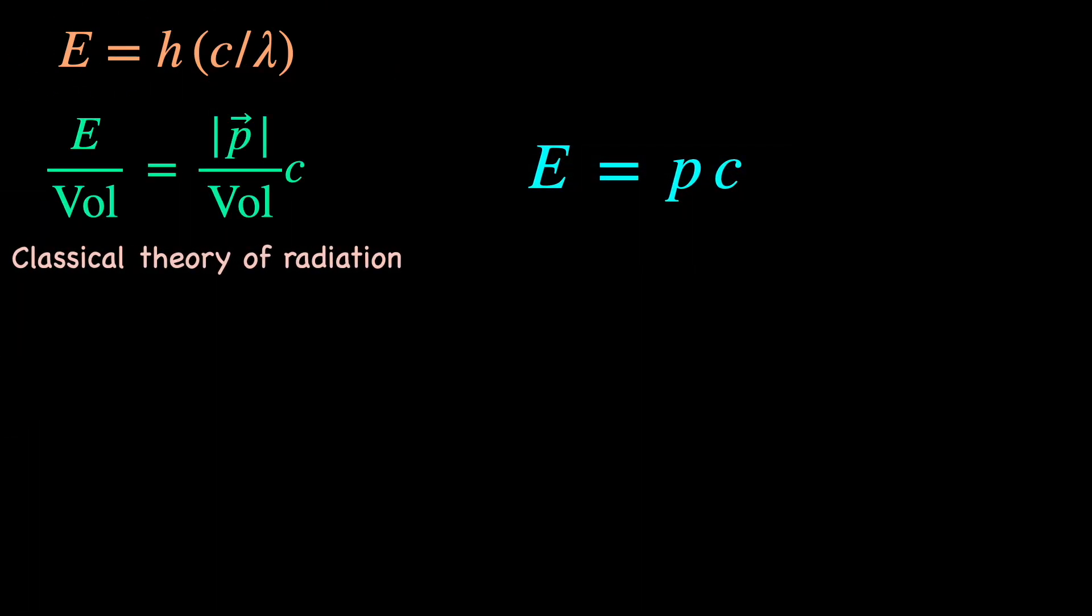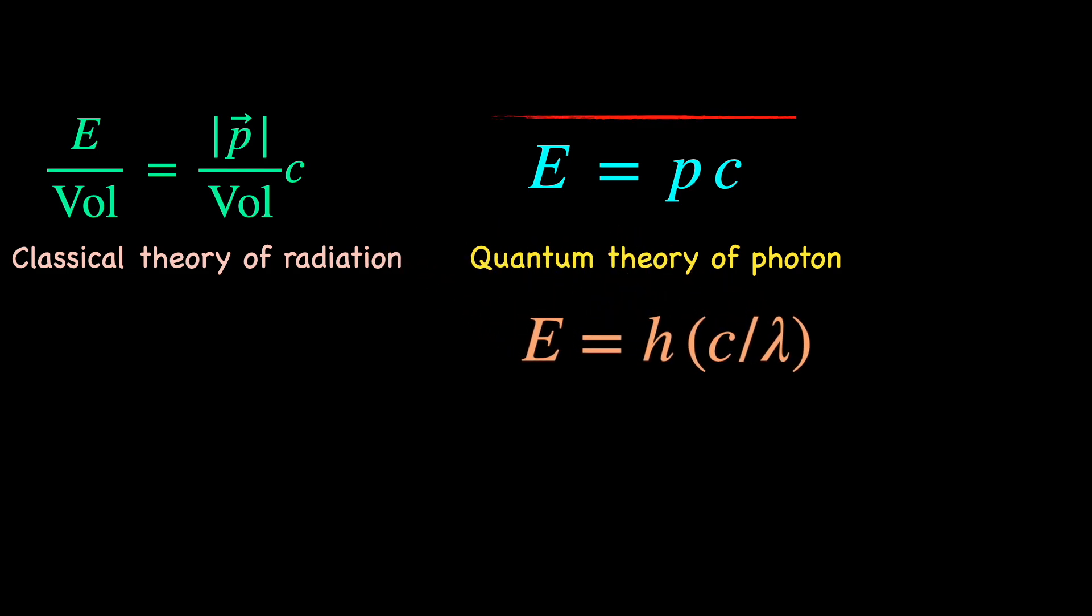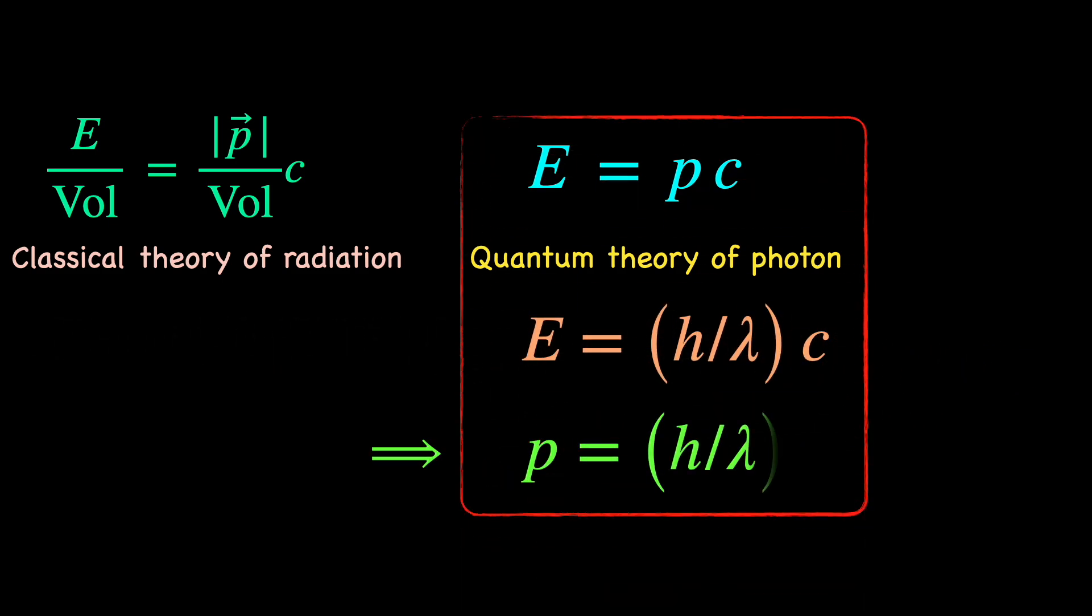But for a photon, this equation is quantum mechanical in nature because the photon's energy is given by the Planck-Einstein definition of a discrete quanta of energy E equals h c divided by lambda. From this emerges the quantum mechanical definition of the photon's momentum in terms of its wavelength as p equals h upon lambda.